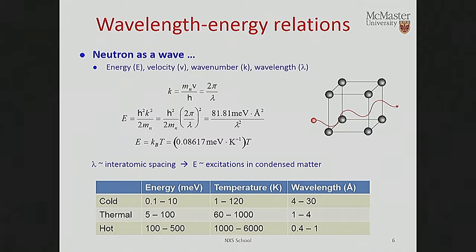The elementary excitations in solids — the things that underlie why you have a phase transition at 300 K or 100 K — can be probed with neutrons that also give diffraction. These are referred to as thermal neutrons, because the temperature associated with them is around room temperature, around 300 K. So those neutrons sitting in the swimming pool water eventually come into equilibrium at about 300 K and have this sort of energy and wavelength distribution.